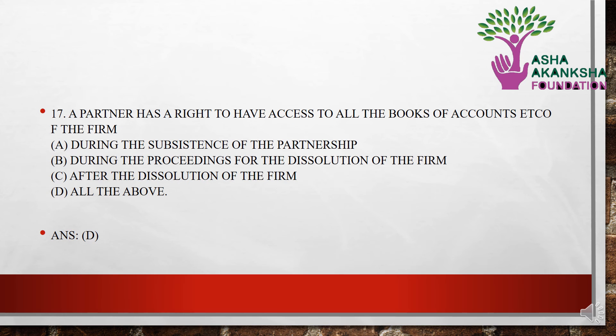The next question is: a partner has the right to have access to all the books of accounts and other things of a firm — fill in the blank. Options: (a) during the subsistence of the partnership, (b) during the proceedings of the dissolution of the firm, (c) after the dissolution of the firm, or (d) all of the above. The correct answer is option D — a partner has a right to access the books of accounts during subsistence of the partnership, during the proceedings of dissolution, and after dissolution of the firm.